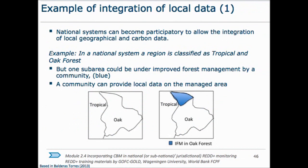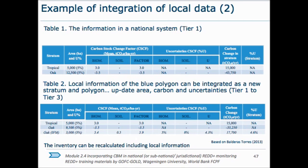For instance, the following slides present an example of how CBM could improve national system data by defining new forest management practices that help reduce variability in the current stratification system. In the figure, an area managed by communities (shown in blue) is where local data can be gathered. Once forest inventories and mapping of this area under improved management are made, an additional line of higher-resolution data can be added to national system databases.